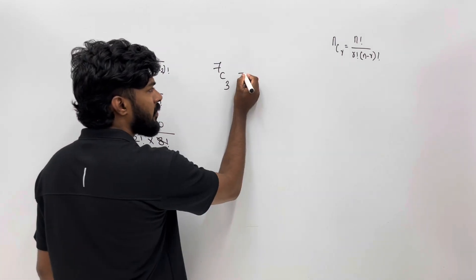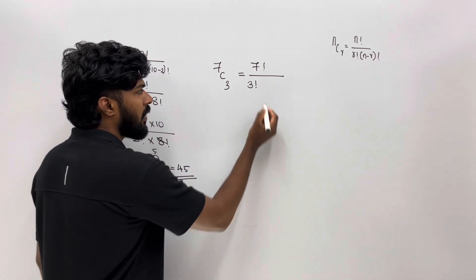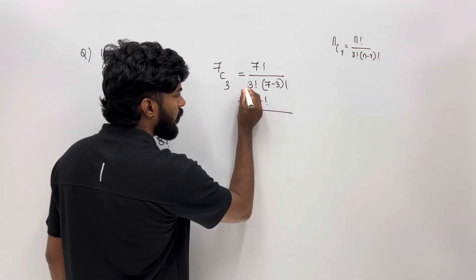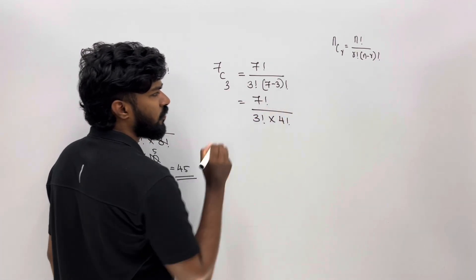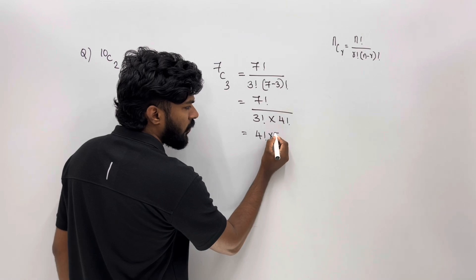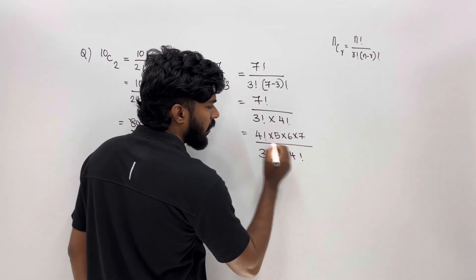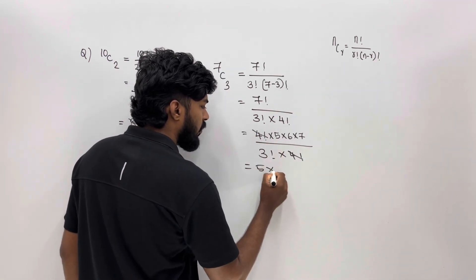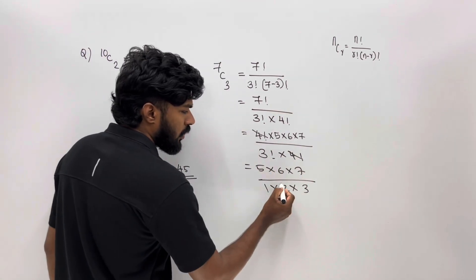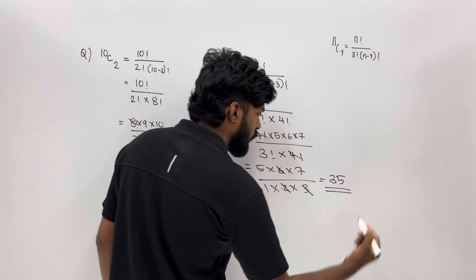7C3. 7C3 is 7 factorial by 3 factorial into (7 minus 3) factorial, which is 7 factorial by 3 factorial into 4 factorial. Now 7 factorial expands as 3 factorial into 4 factorial into 5 into 6 into 7, and 3 factorial is 1 into 2 into 3. This simplifies: 4 factorial cancels, and 7 into 5 is 35.